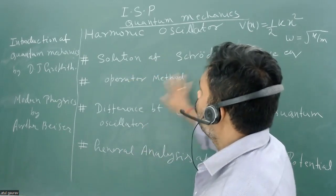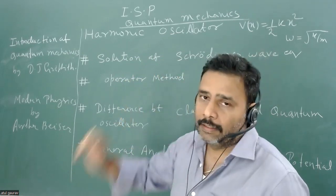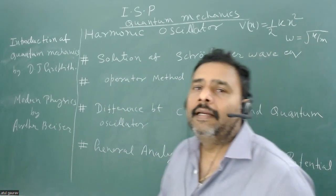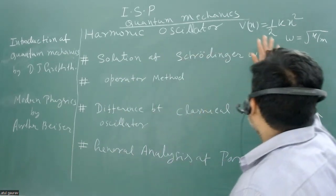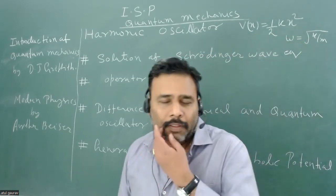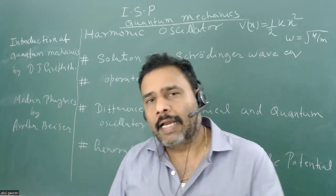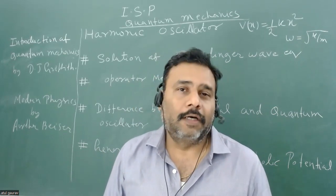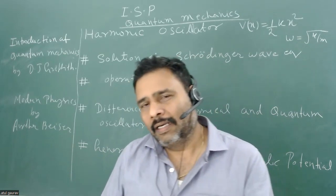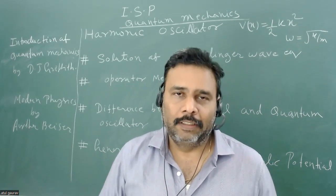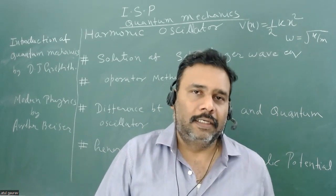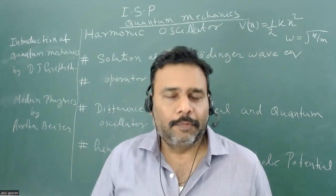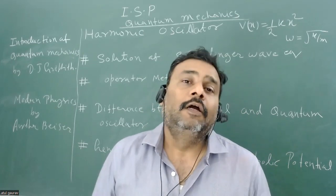You have to focus on the solution of the Schrödinger wave equation, the operator method, and the difference between classical and quantum mechanical harmonic oscillator. They will also twist their questions from the general analysis of parabolic potential. We all know the harmonic oscillator potential is ½kx², where ω = √(k/m). You should start from the classical harmonic oscillator — go up to plus-two level knowledge — covering what harmonic and anharmonic mean, and how you can approximate any potential to a harmonic oscillator.